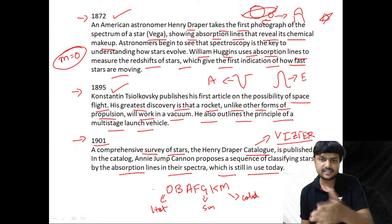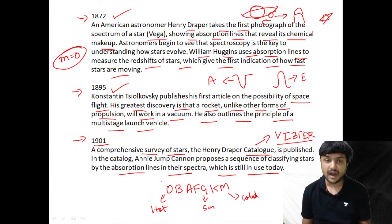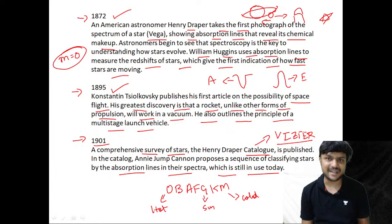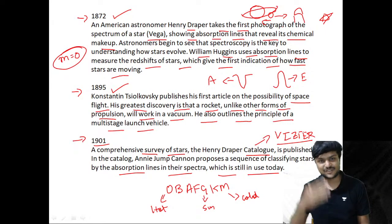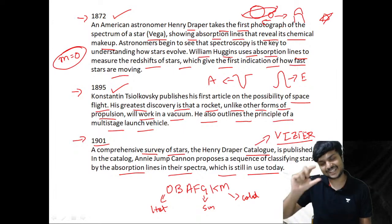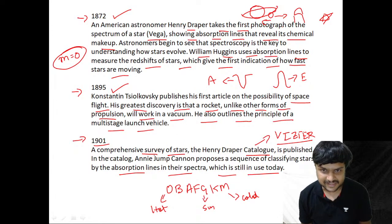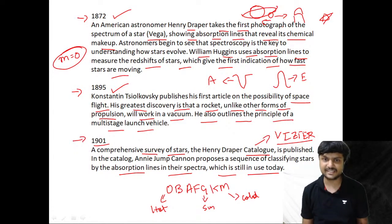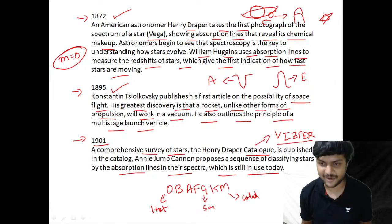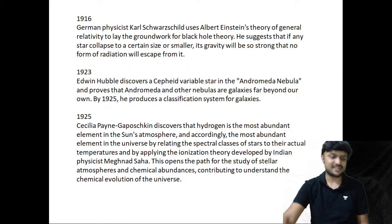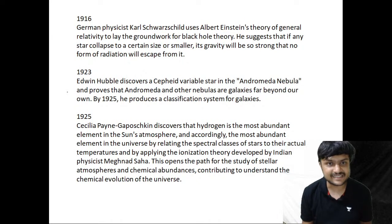So in history we start from 1872 with Henry Draper's first photograph of Vega, which defined the zero point of magnitude. Then we have Tsiolkovsky's rocket propulsion theory in 1895 — he outlines multi-stage launch vehicles. Then in 1901 we have the comprehensive catalog survey, with the Henry Draper catalog being one of the most famous.